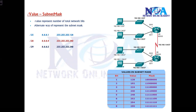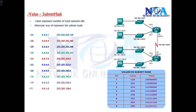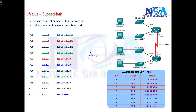For slash 29: 8+8+8 = 24, plus 5 = 29, and 5 bits gives 248, so the subnet mask is 255.255.255.248. For slash 19: 8+8 = 16, plus 3 = 19, and 3 bits gives 224, so the subnet mask is 255.255.224.0. For slash 20: 8+8 = 16, plus 4 = 20, and 4 bits gives 240, so the subnet mask is 255.255.240.0.